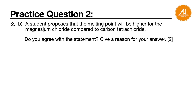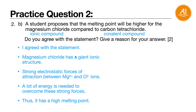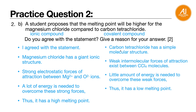A student proposed that magnesium chloride has a higher melting point than carbon tetrachloride. Do you agree? Yes. Magnesium chloride has a giant ionic structure with strong electrostatic force of attraction between Mg2+ and Cl- ions. A lot of energy is needed to overcome these strong forces, giving it a high melting point. Carbon tetrachloride has a simple molecular structure. Weak intermolecular forces of attraction exist between CCl4 molecules. Only a little energy is needed to overcome these weak forces, so it has a lower melting point.